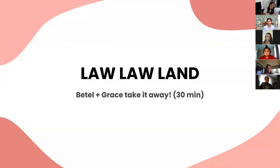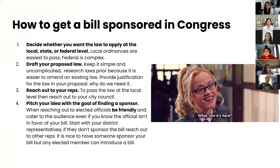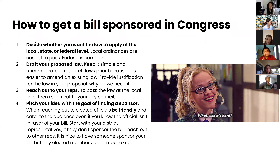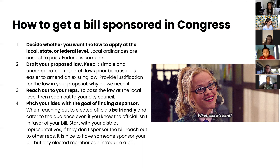I'm going to start with how a bill gets sponsored in Congress. The first step is to decide whether you want the law to apply at the local, state, or federal level. Local ordinances are the easiest to pass, whereas federal is very complex and hard. After figuring that out, draft your proposed law — keep it simple, research existing laws, since it's easier to amend an existing law than create a new one, and always provide justification for why the law is needed and what benefit it would bring.